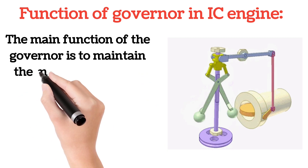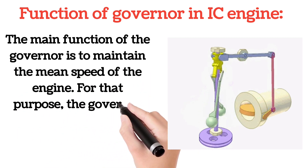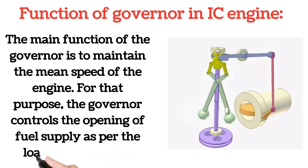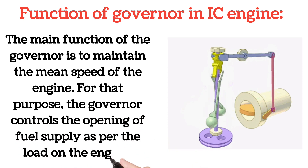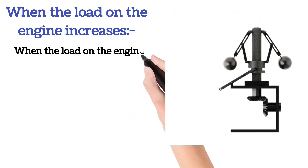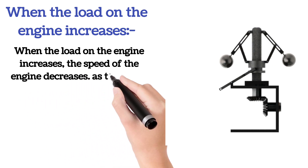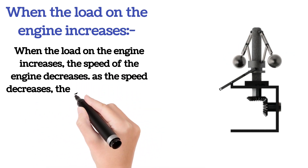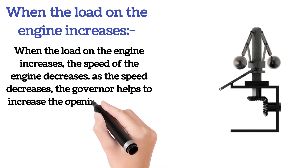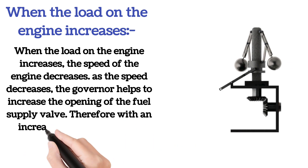The main function of the governor is to maintain the mean speed of the engine. For that purpose, the governor controls the opening of the fuel supply valve as per the load on the engine. When the load on the engine increases, the speed of the engine decreases. As the speed decreases, the governor helps to increase the opening of the fuel supply valve.